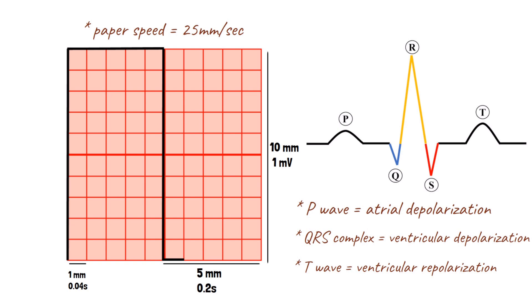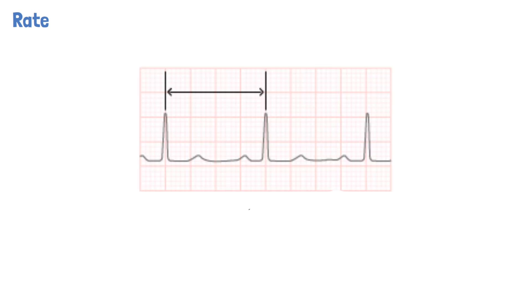When interpreting an ECG, the first three things that should be assessed are the rate, the rhythm, and the axis. The heart rate can be calculated from the ECG using various methods. In most circumstances, when there is a regular rhythm, the simplest way is by counting the number of large squares between the spike of each R-R complex. By dividing 300 by this number, we can get the heart rate.